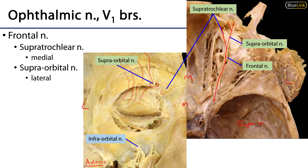The supratrochlear nerve gets its name because it exits the skull just adjacent to the trochlea, which is a little pulley for the superior oblique muscle. This supratrochlear nerve is responsible for sensory innervation to the medial forehead, the medial superior eyelid, and the medial superior conjunctiva of the eye. It is a little more diminutive than the supraorbital nerve.